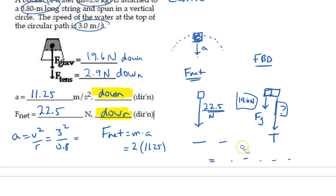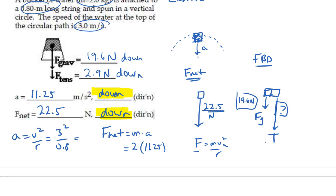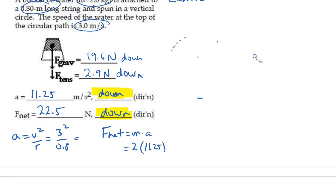Interesting to consider: if you swing the bucket faster, the force of gravity doesn't change but F_net increases since F_net = mv²/r. So tension increases as you swing faster and decreases as you slow down. At the minimum speed to complete the loop, tension equals zero newtons — the only force acting is gravity, so the object is essentially a projectile at the top of the loop.